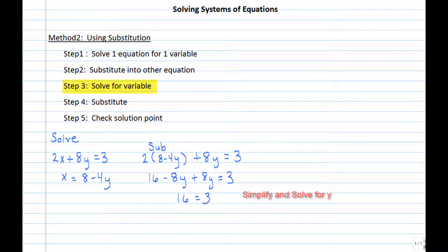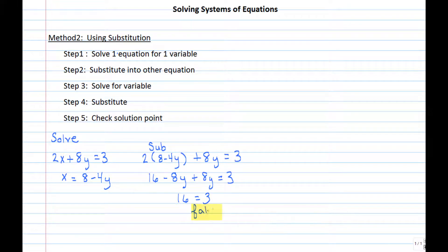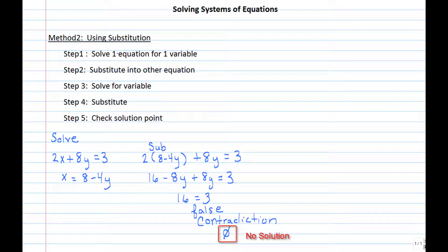Notice how this example differs — the variable disappeared. When that happens, you'll either have a contradiction or an identity. Because the statement 16 equals 3 is false, this is a contradiction. That means no point will satisfy both equations, so the solution is no solution.